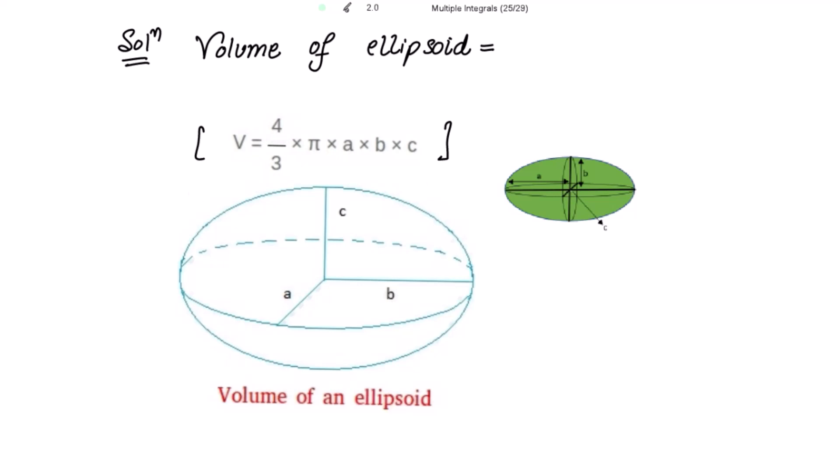There is a graph for the ellipsoid — the big one and the smaller one. The green colored one has eight equal sections. So on account of symmetry, the required volume is eight times the volume of the ellipsoid in the positive octant.